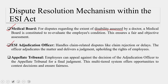The ESI adjudication officer handles claim-related disputes like claim rejection or delays. The officer adjudicates the matter and delivers a judgement upholding the rights of employees. Finally, employees can appeal against the decision of the adjudication officer to the appellate tribunal for a final judgement. This multi-tiered system typically offers the opportunity to contest decisions and ensure fairness, with a medical benefit council at the first level and an employee insurance court at the next.